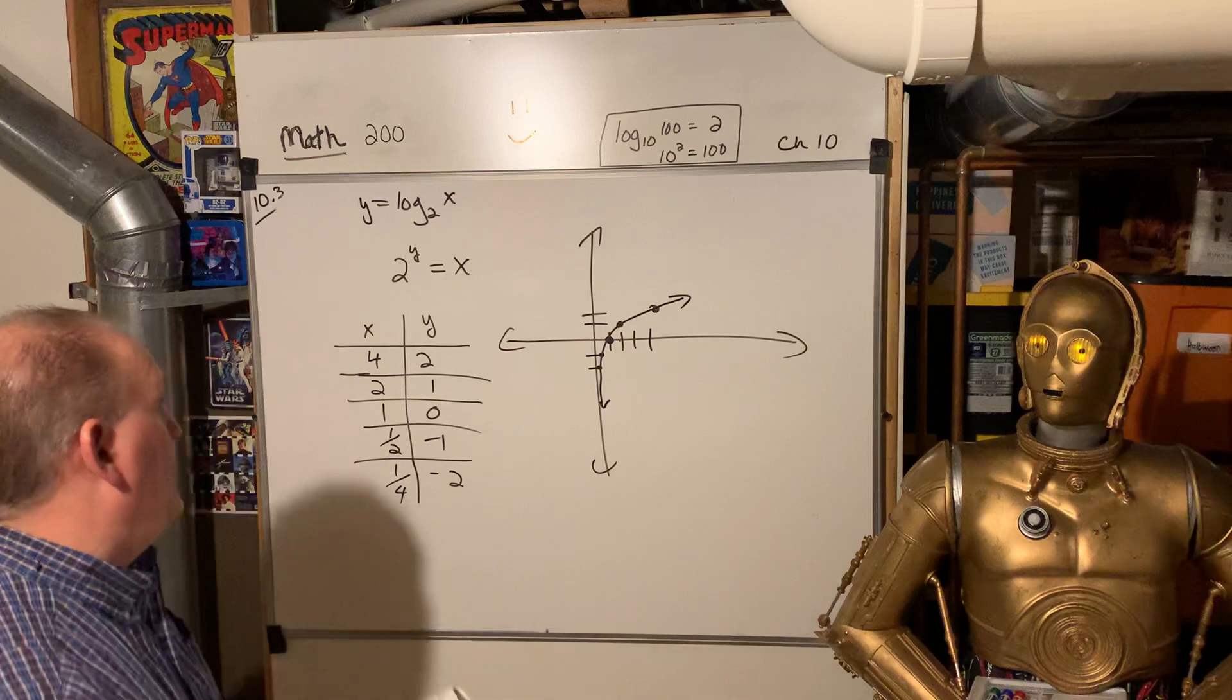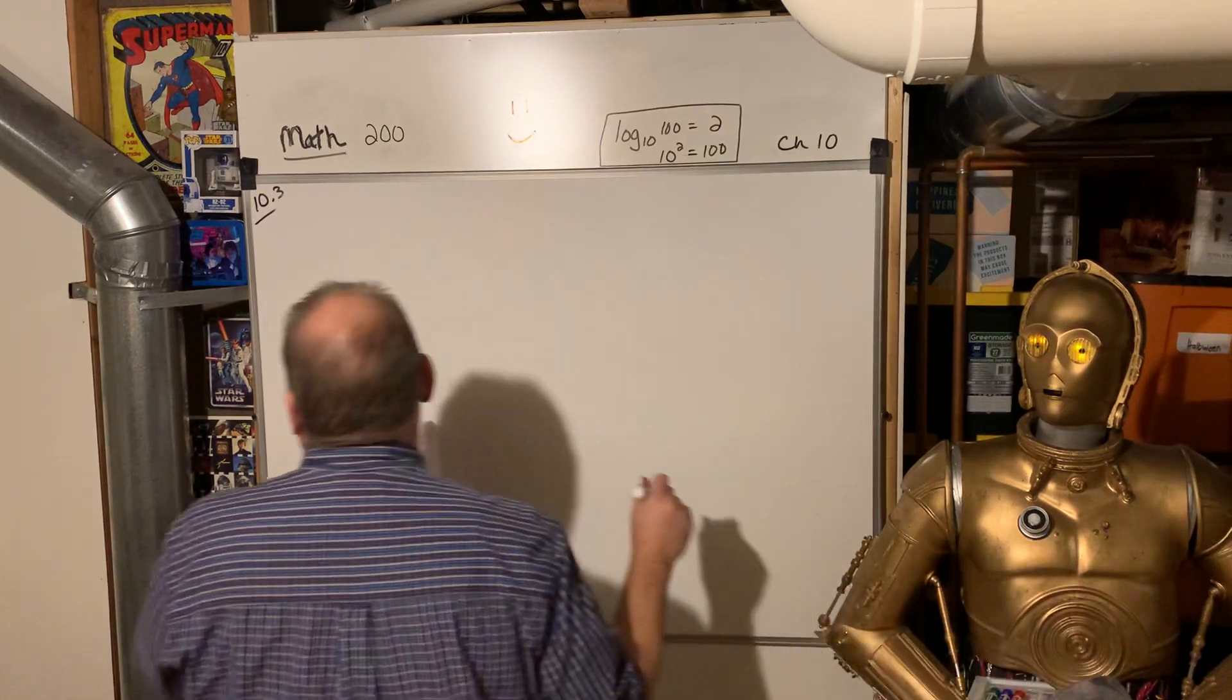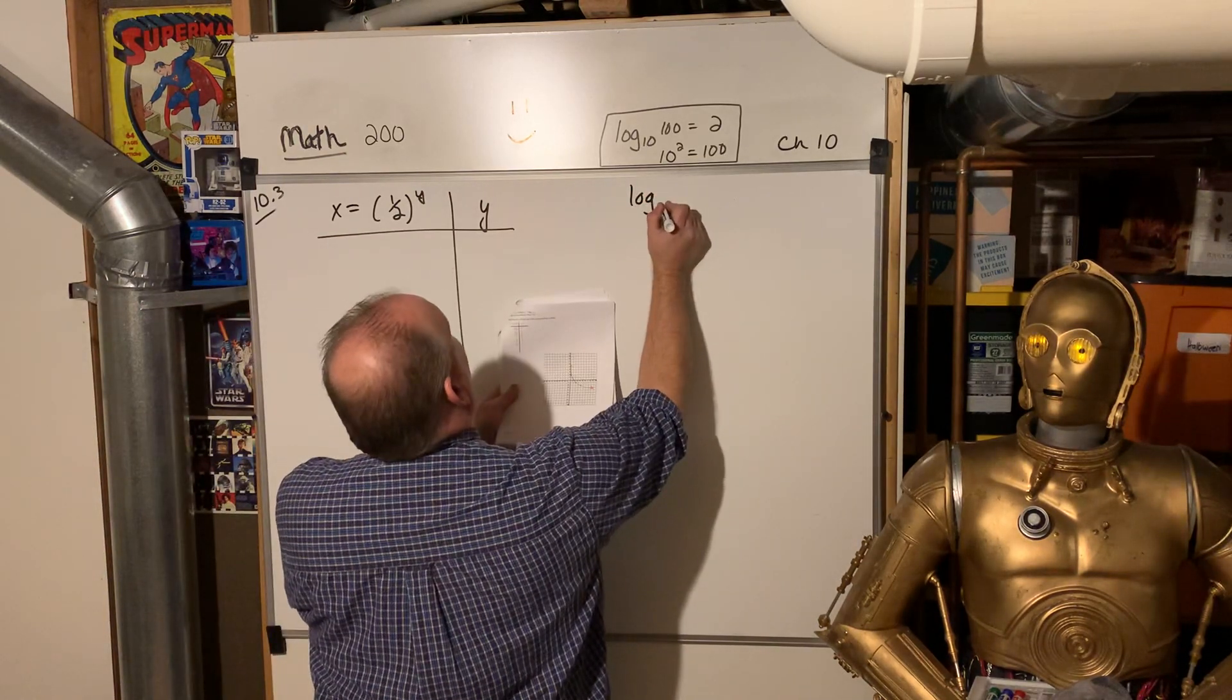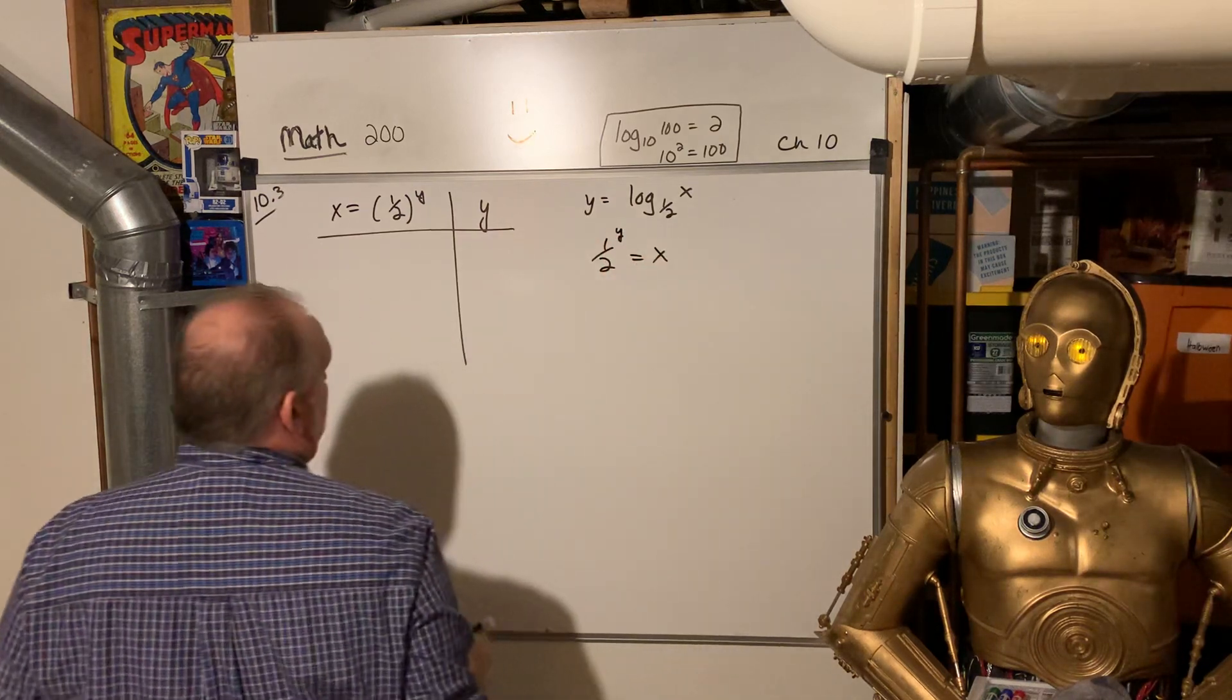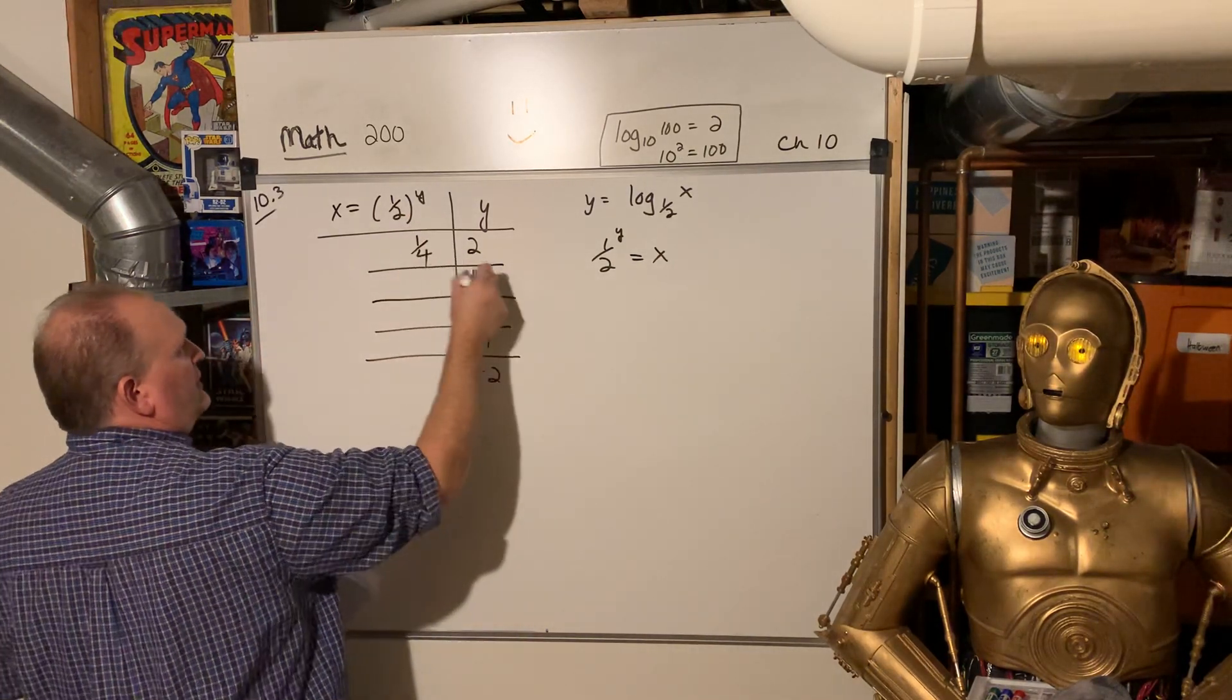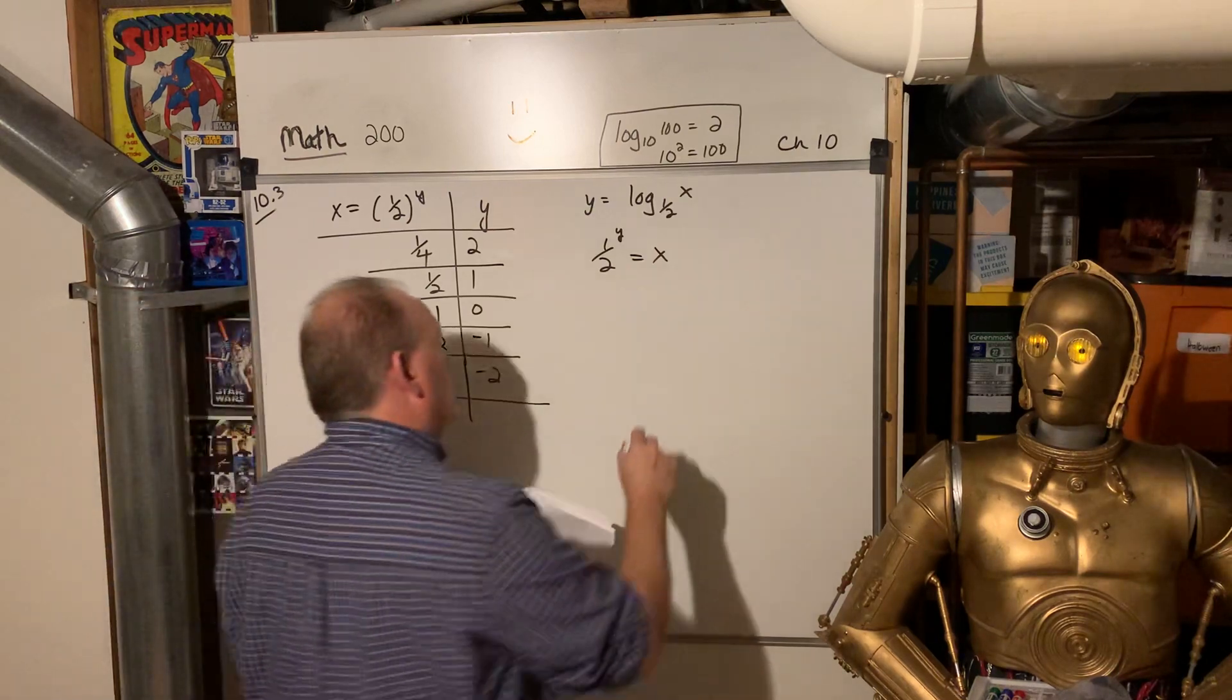And then if we look at another graph on next page, page 17, in your note packet, we got x is equal to one half to the y power and then y. So this was log base one half of x, y is equal to that. So we'd say one half to the y is equal to x. And so again, we would pick y values. Two, one, zero, negative one, negative two. And squared is one fourth. So the first is one half. Anything to zero power is one. Negative one is two, right? It brings it up. Negative two, it takes a two squared to the top is four.